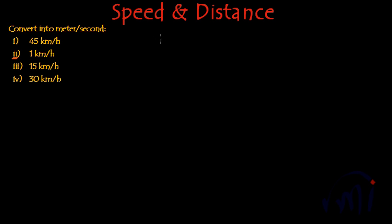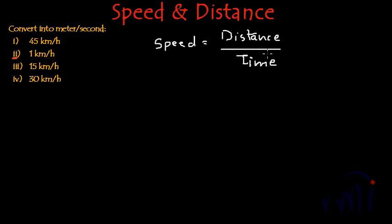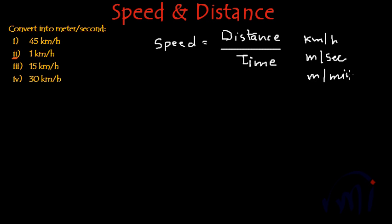So what is speed? The formula for speed is: speed is actually distance traveled in unit time. If we divide the distance covered by the time taken we get speed, which is distance by time. The units of speed are kilometers per hour, meters per second, or meters per minute. We usually avoid kilometers per minute and meters per hour because they give lots of decimals, so speed is typically expressed in kilometers per hour, meters per second, or meters per minute.